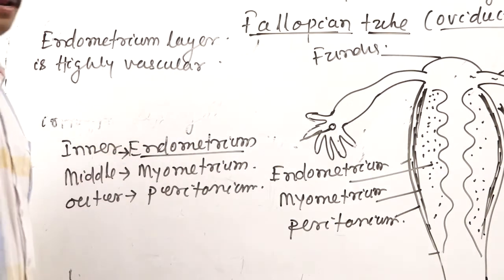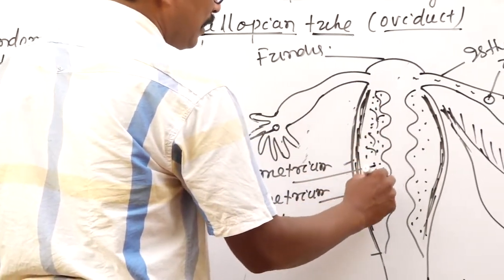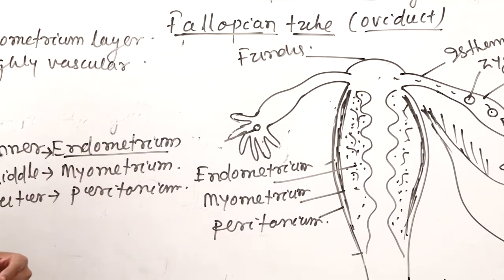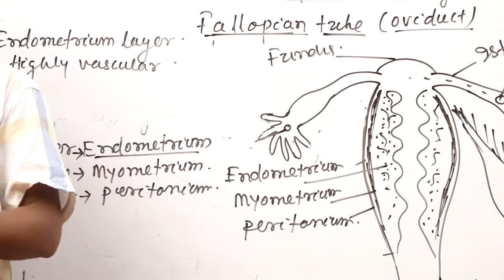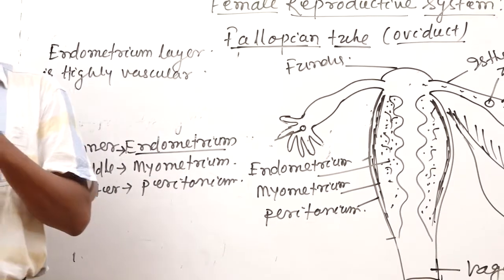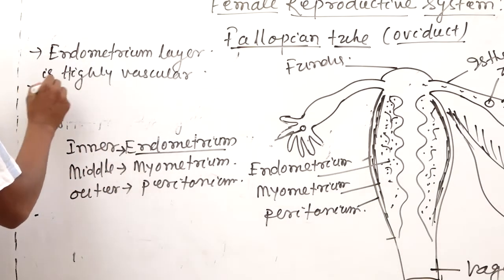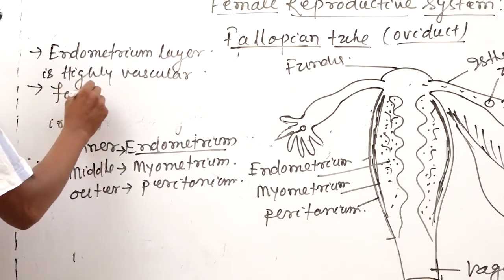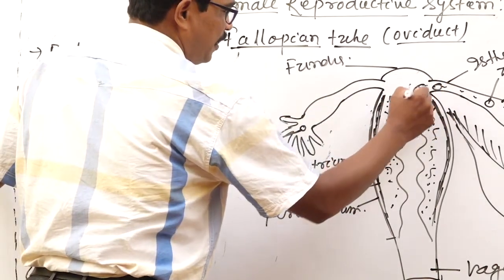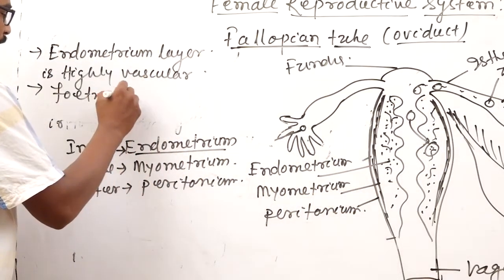The endometrium layer is highly vascular — meaning rich in blood capillaries. It is the site for accommodation of the fetus. The developing embryo, or fetus, develops in this layer.